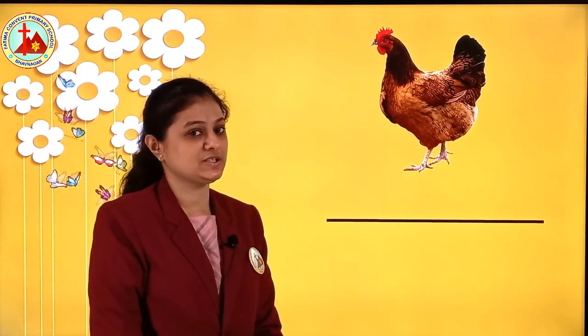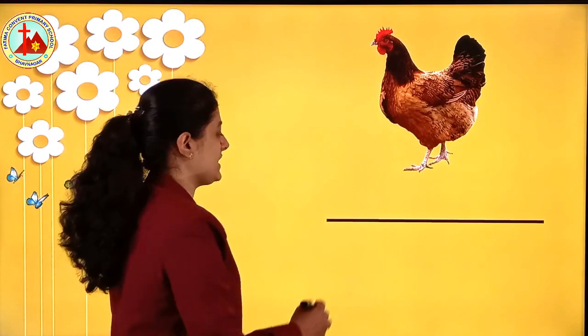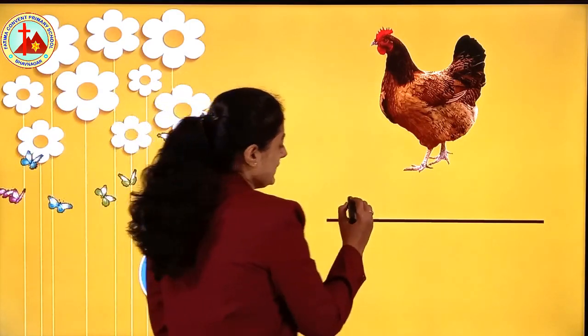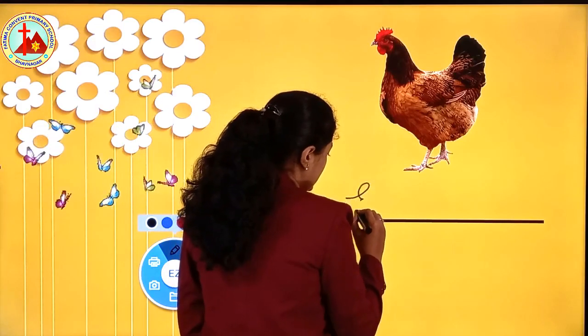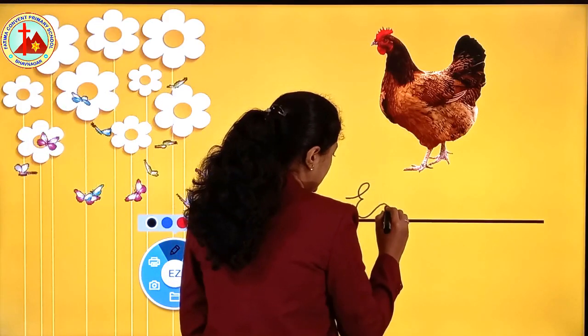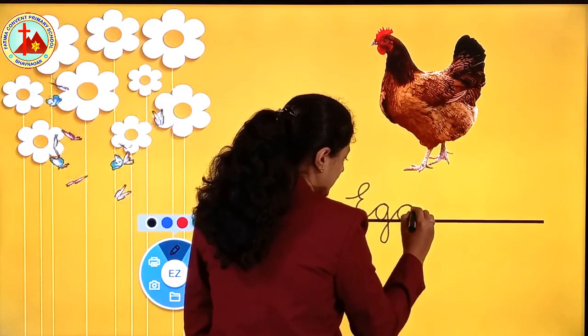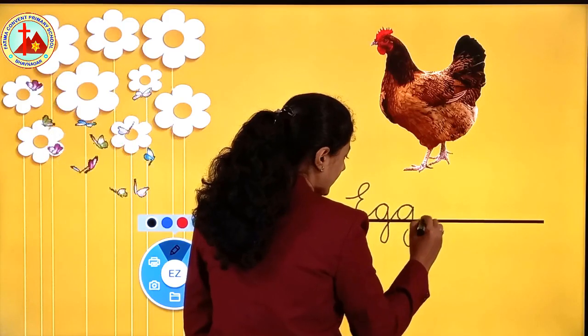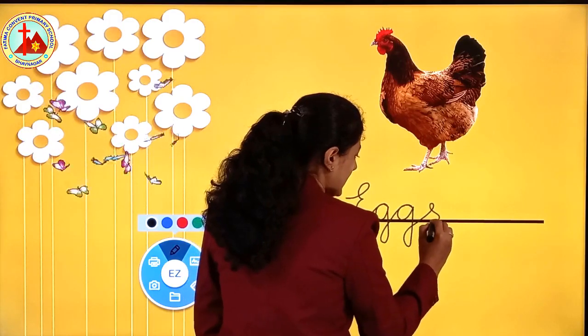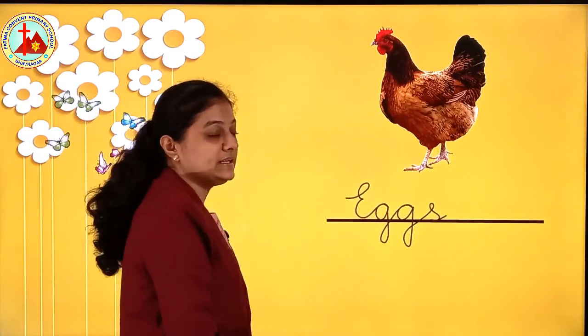The next picture is also very easy — just now we learned. What does hen give us? Eggs. Very good. E capital. E-G-G-S. Eggs.